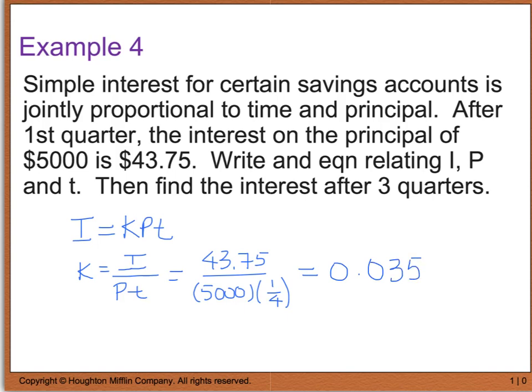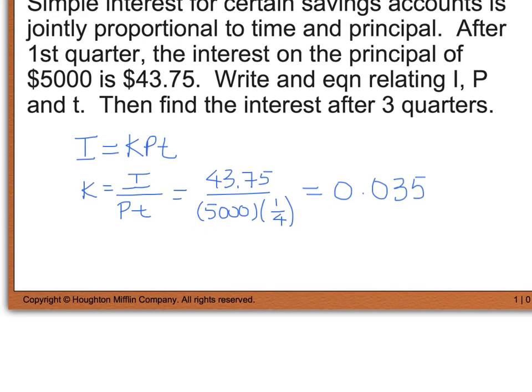So now that I know what k is, I can go ahead and solve for the interest after the first three quarters. So I know that my interest is going to be found by taking that k value of 0.035 and multiplying it by my principal value, which was $5,000 still. And now my time is going to be three quarters, or three-fourths. And when you simplify this, we'll see that we've earned $131.25 in the first nine months of the year.